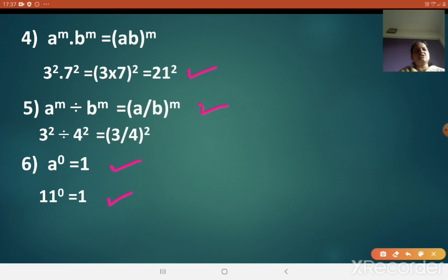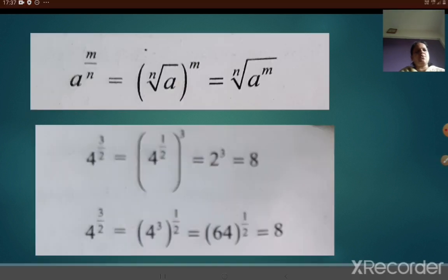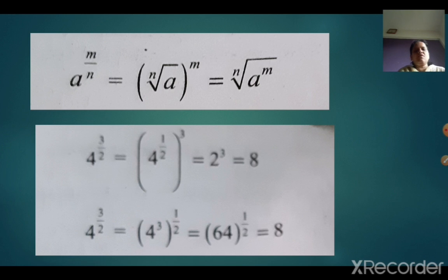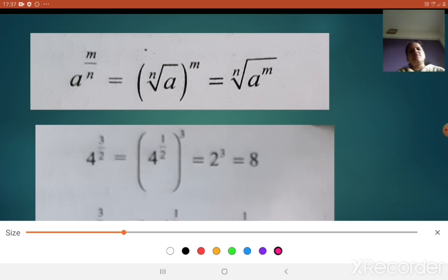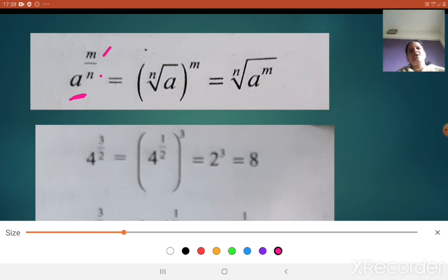Hope all these formulas and laws are clear to you. Now let us look at a very important new concept. Till now, the laws we have seen are from the 8th standard. This is a new one. What is a raised to m upon n? Here m and n are the index, and the index is given in fraction form. m is nothing but your index or power, and n — the denominator — is nothing but the root.